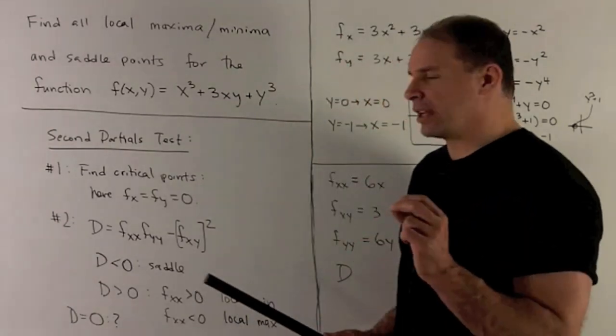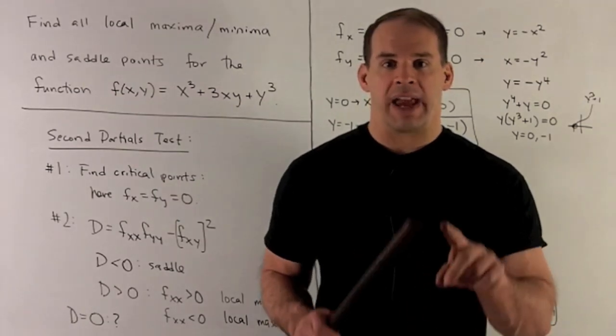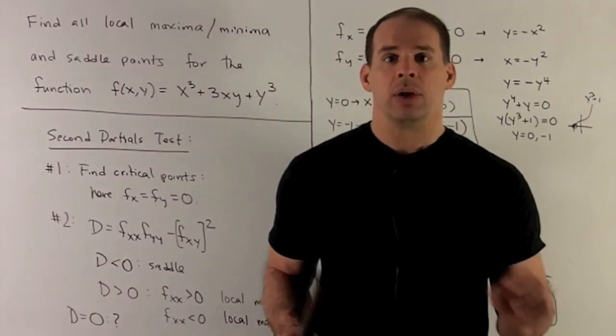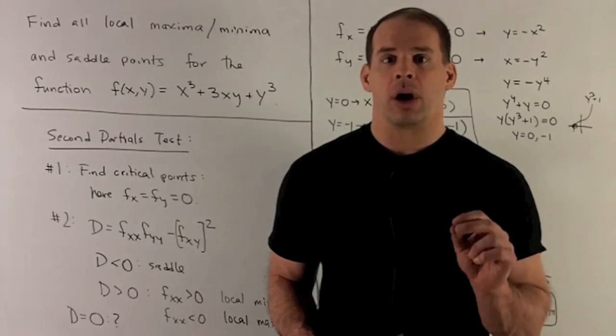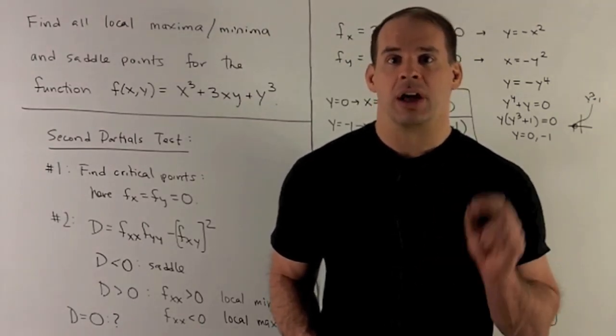If that number's positive, we're going to need to check the second derivative with respect to x. If that's positive, then we're concave up, we have a local minimum. If it's negative, we're concave down, we have a local maximum. And if it's 0, it's inconclusive. We're going to have to figure out how to get the answer another way.